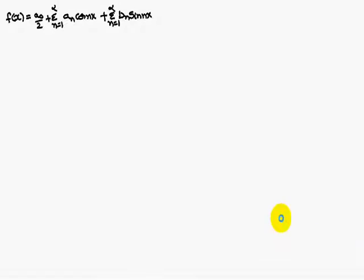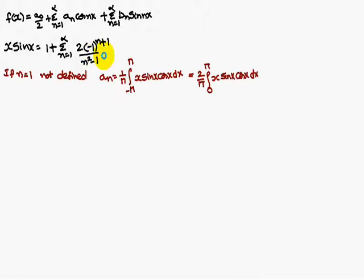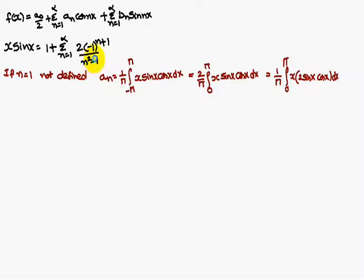Now we substitute into the Fourier expansion. a0 is 2, so a0/2 is 1. The series is: 1 plus sigma (n=1 to infinity) of [2(−1)^(n+1) / (n²−1)] cos(nx). However, if n = 1, then n²−1 = 0, giving infinity. So n = 1 is not defined by this formula, and we must treat it as a separate case.